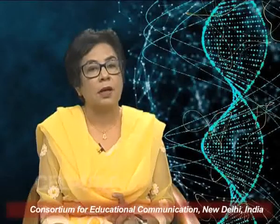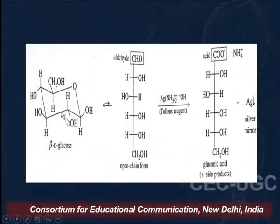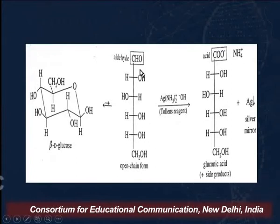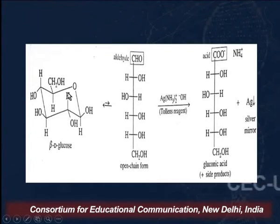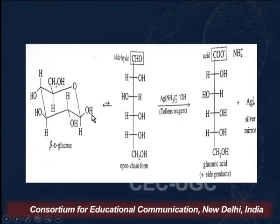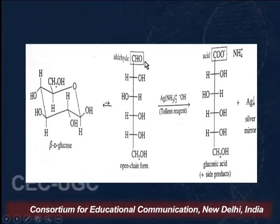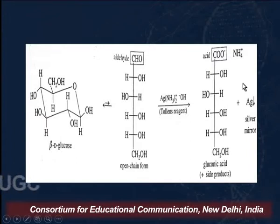The molecule should exist as a hemiacetal in the cyclic form. We know that in the cyclic form, due to the intramolecular reaction between the OH on the fifth carbon and the CHO group, the open chain structure exists as either alpha-D-glucose or beta-D-glucose — this is your hemiacetal. When this hemiacetal is reacted with Tollens' reagent, which is ammoniacal silver nitrate, it undergoes ring opening, converts into the open chain structure with an aldehydic group, and this aldehydic group reduces Tollens' reagent, giving us a silver mirror.